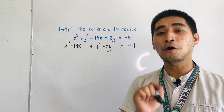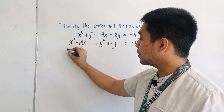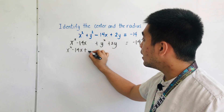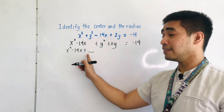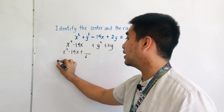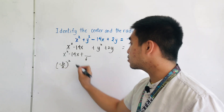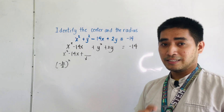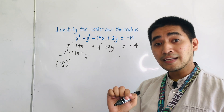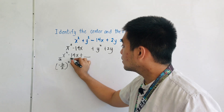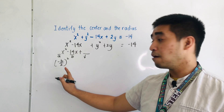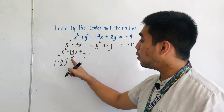Next step is to complete the square. Always remember that in completing the square, we have x squared minus 14x, and there is another term that we need to complete. The formula is negative b over 2, squared. In a quadratic equation, the coefficients of x squared, x, and the constant will be a, b, and c respectively. So what is b?